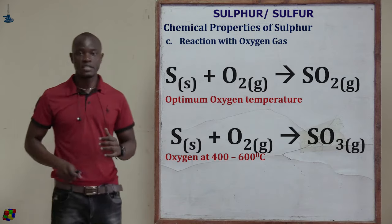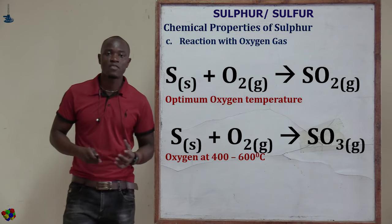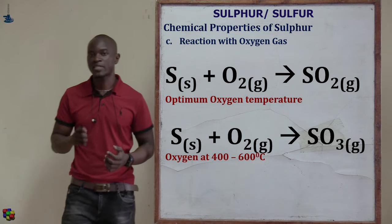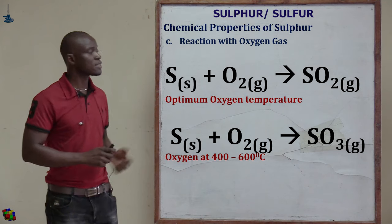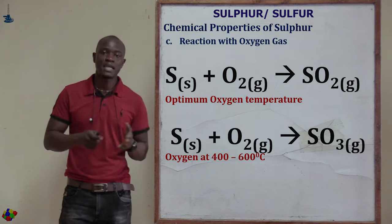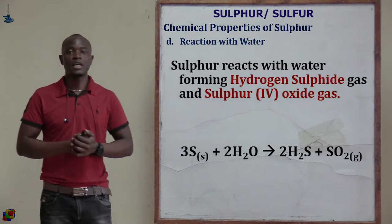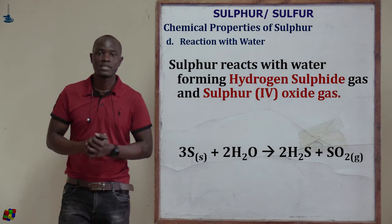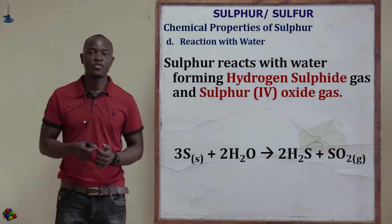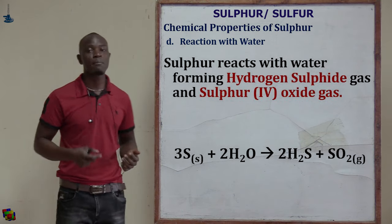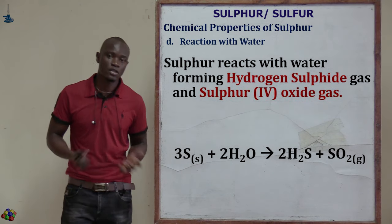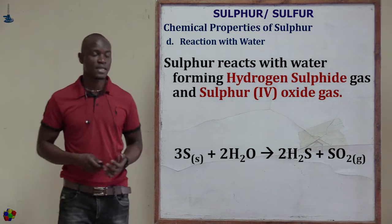Reaction with oxygen: sulfur reacts with excess oxygen to form sulfur dioxide (SO₂) gas. Reaction with water: sulfur reacts with water forming hydrogen sulfide (H₂S) and sulfur dioxide (SO₂) gas.